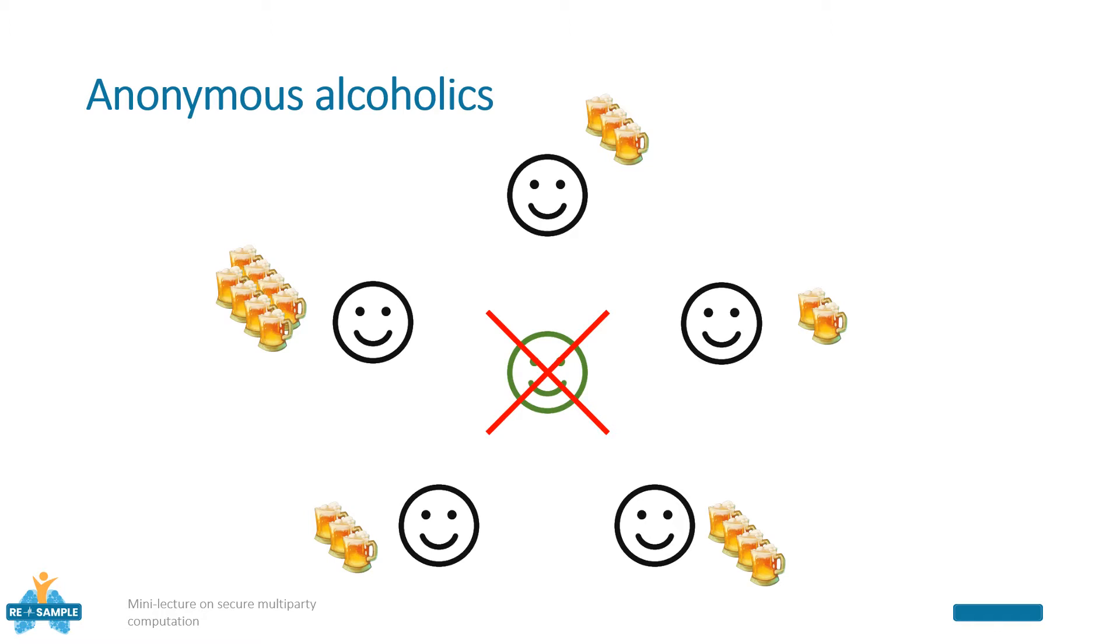But what if there is not such a friend as Steve? So what can they do in this case? Just to repeat the problem, how can they compute the average number of beers in such a way that they cannot get any information about the amount drunk by the others?